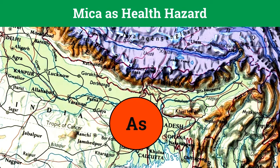Biotite, which contains arsenic, causes arsenic pollution in drinking groundwater, which is the case in the Ganga-Brahmaputra Delta region. This pollution of drinking water causes skin lesions and skin cancer, which are serious human health hazards.